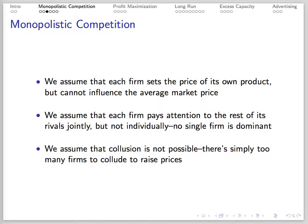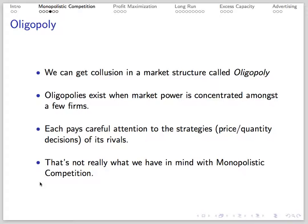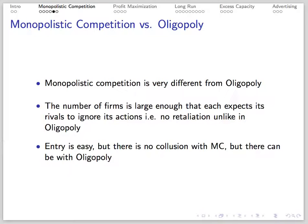We're thinking of a situation where firms affect the price of their own product, but not the average market price. Each firm considers the actions of its rivals jointly, but not individually, so we want to rule out the possibility of collusion. There are too many firms for collusion to successfully raise prices. Collusion would be possible in a different market structure called oligopoly, which is related to monopolistic competition, but with oligopoly firms care about the strategies of their rivals individually. Oligopoly is the natural extension of a monopoly to a few firms, while monopolistic competition extends market power to many firms.